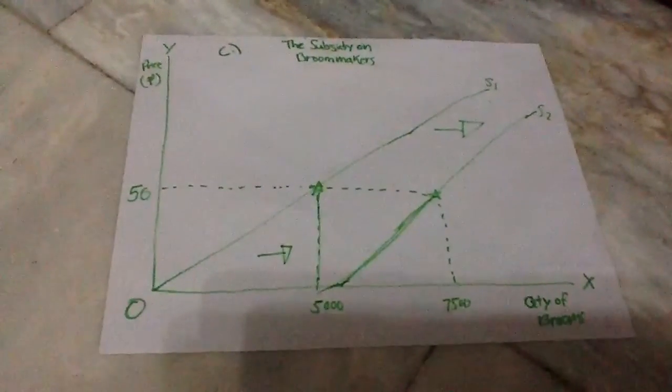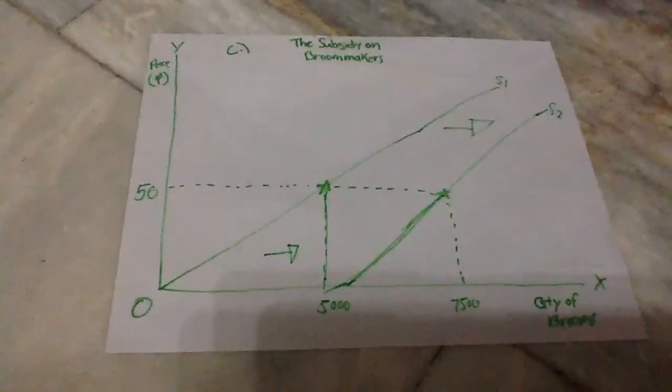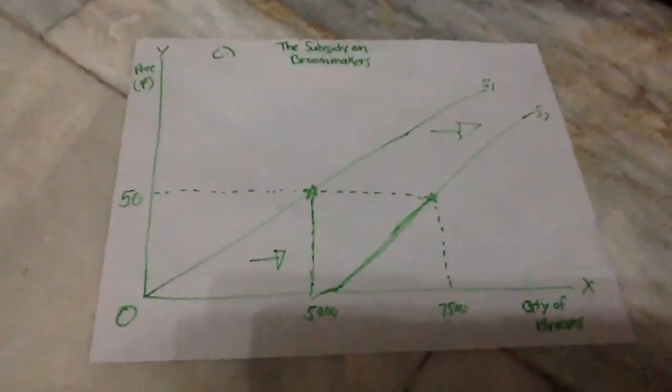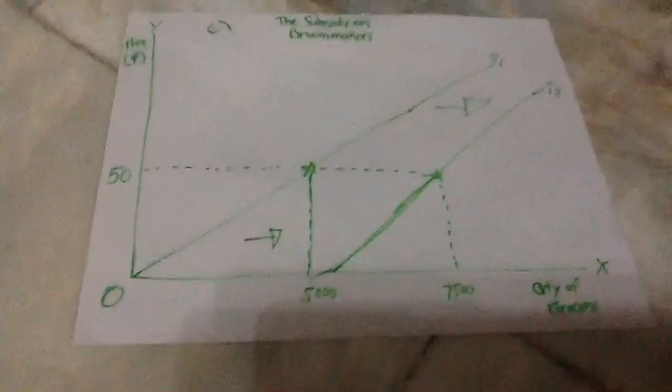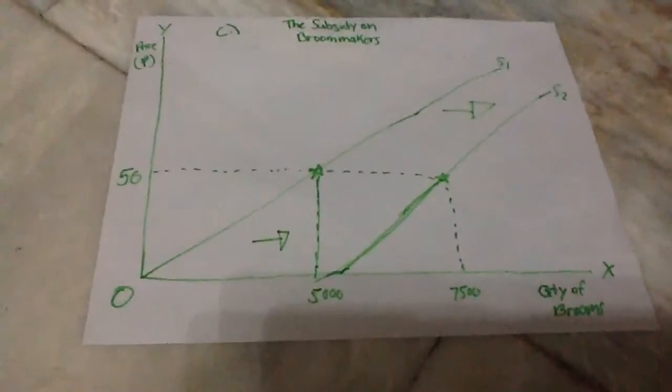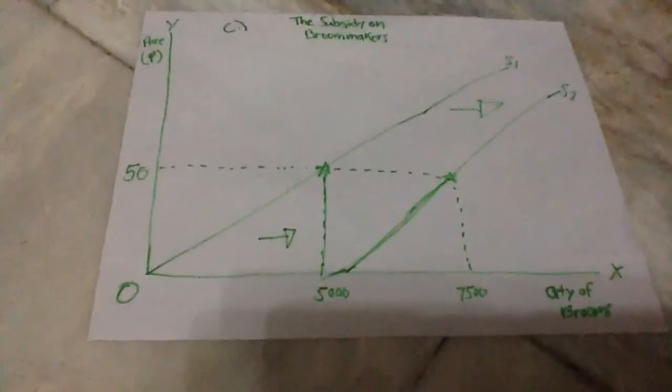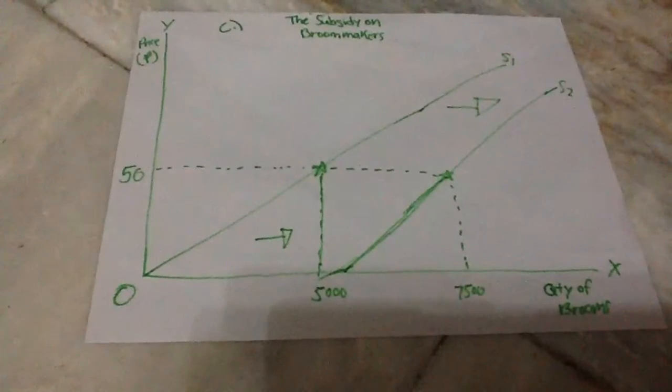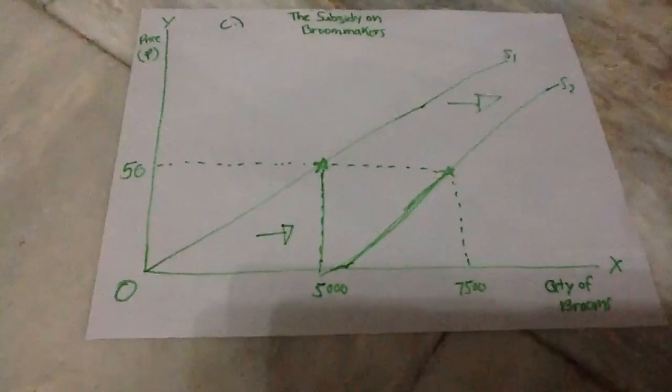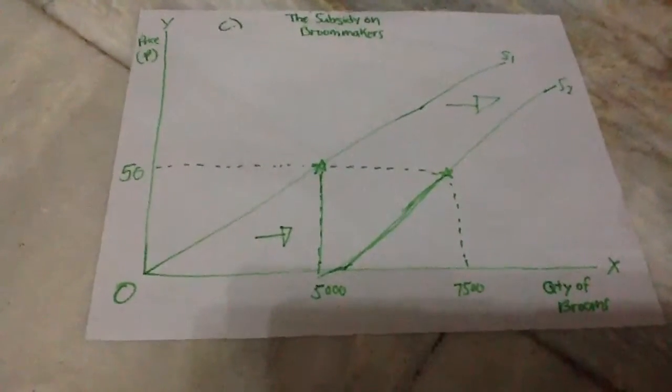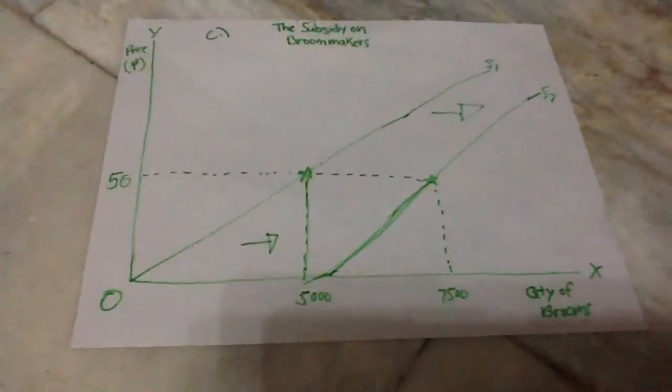Number two. This is a graph of the effect of the subsidy on broom makers. As we can see, when the subsidy is established, from a price of 50 pesos to a quantity of 5,000, it became a price of 50 pesos on a quantity of 7,500.